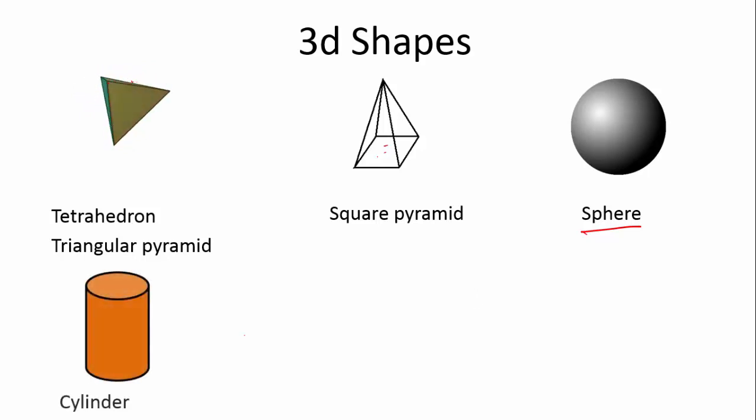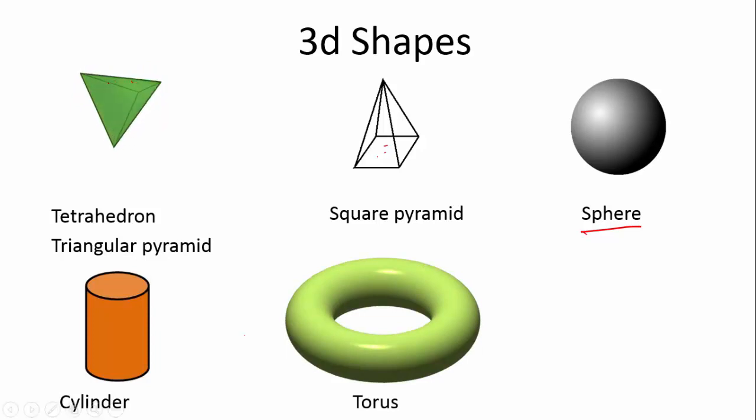Then we have a cylinder. That's like your coke can. Then we have something called a torus. Now, a torus is a mathematically interesting shape. We're not going to deal with it now. But this is a common 3D shape that people use.